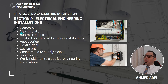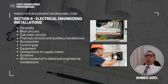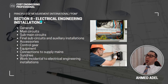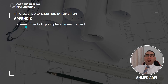Section R — Electrical Engineering Installation. This covers main circuits, sub-main circuits, final sub-circuits, auxiliary installations, accessories, control gear, equipment, connections to supply mains, sundries, and any other electrical works applicable to the project.